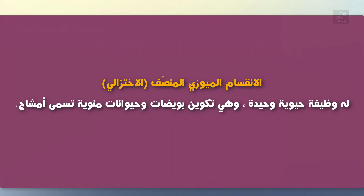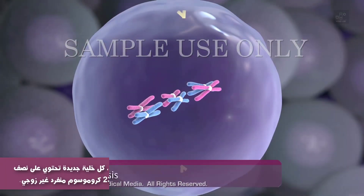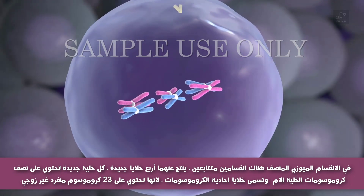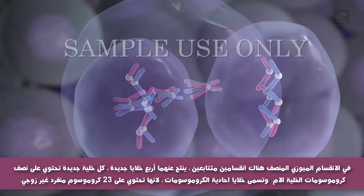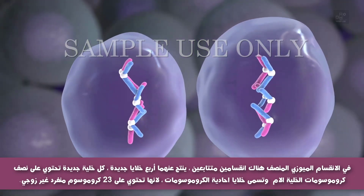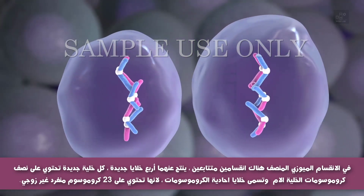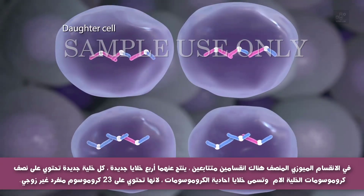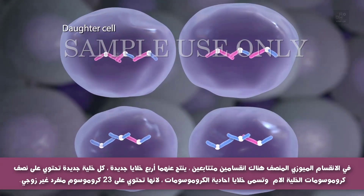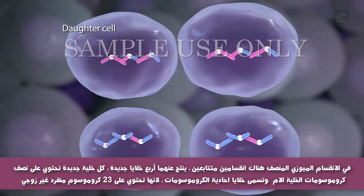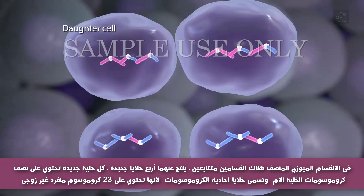Meiosis is a type of cell division with one purpose: to produce eggs and sperm, called gametes. In meiosis, there are two divisions in succession, resulting in four daughter cells, each containing half the number of chromosomes of the initial parental cell.